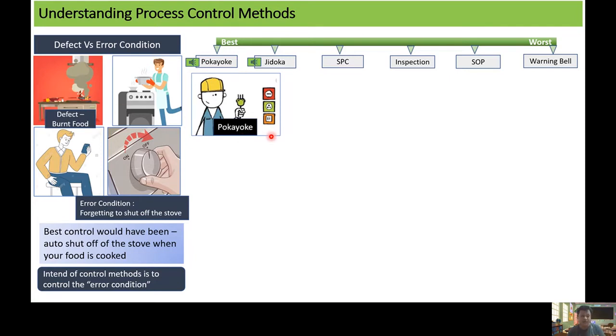In this condition, this control of auto shut-off in the stove would have acted as a Poka-yoke control and this would have avoided creating the defect of burnt food. There are many examples of Poka-yoke which you can find easily in Google or different YouTube videos.